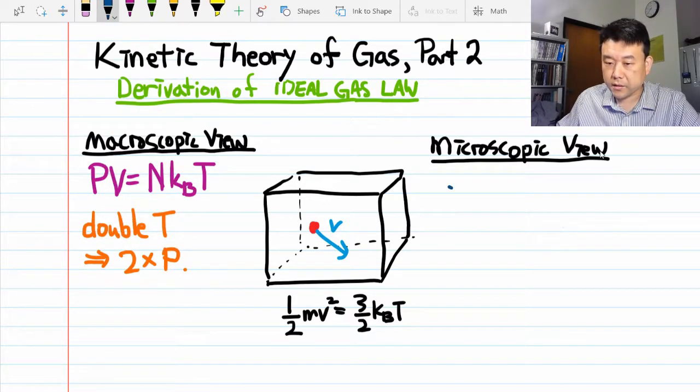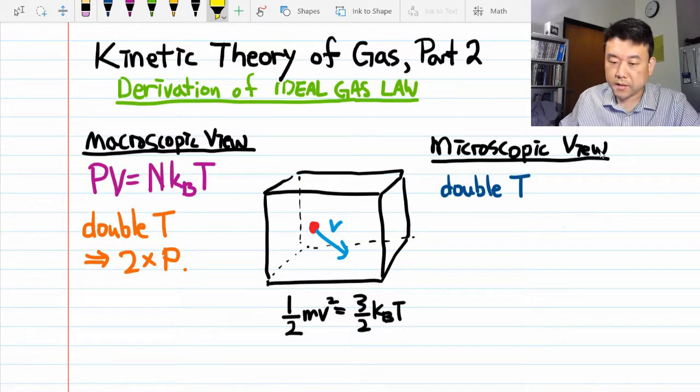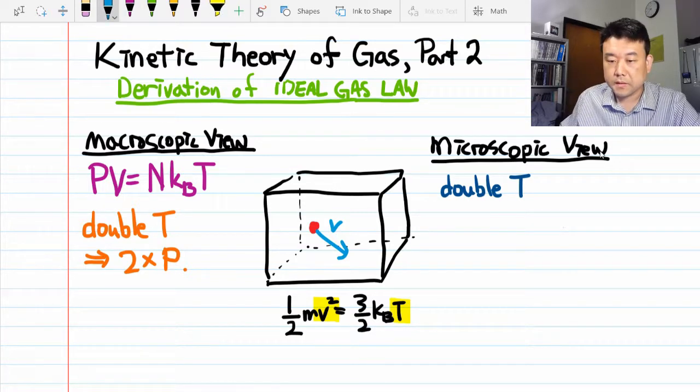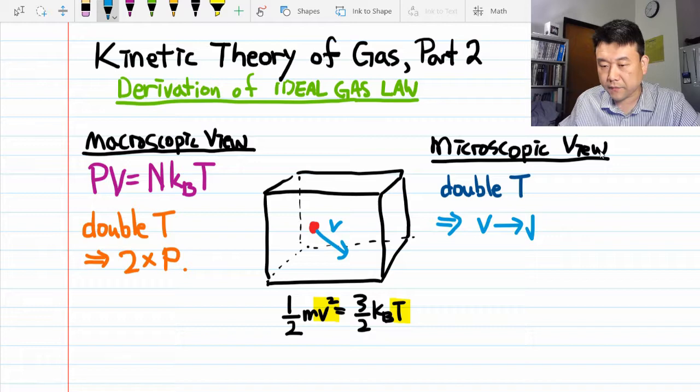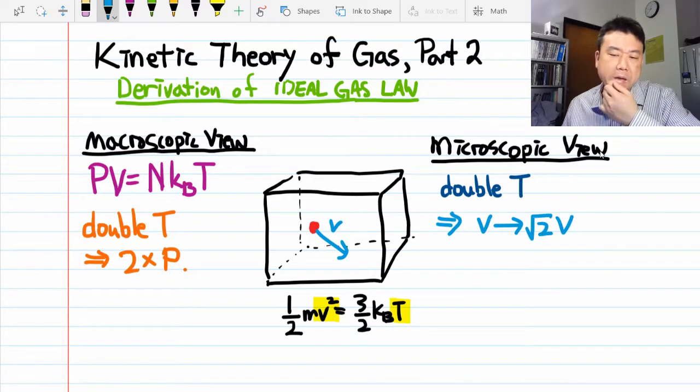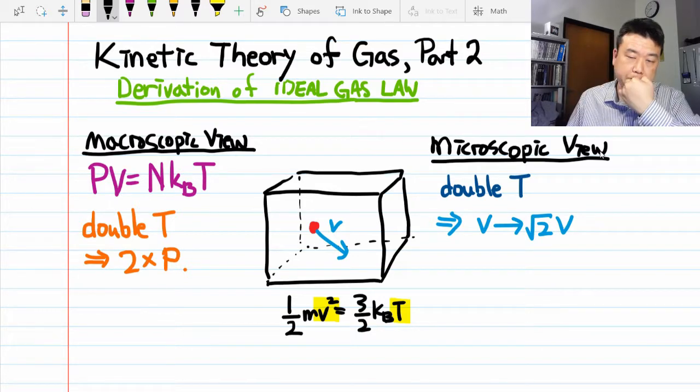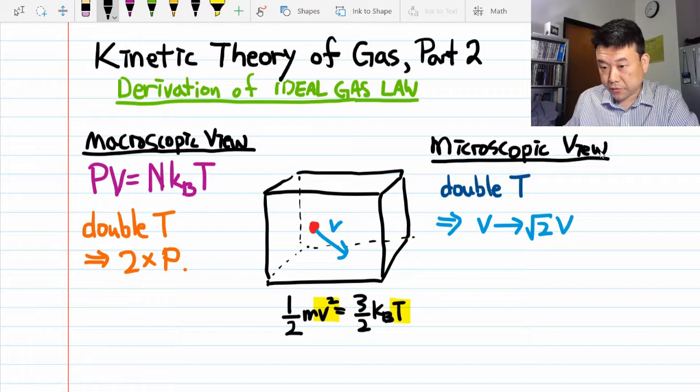Here, if you double the temperature, then temperature scales as v squared. So your speed wouldn't quite double. Instead, your speed increases by a factor of square root of two. But I somehow have to get to doubling of pressure. Well, let's go back to the definition of force.